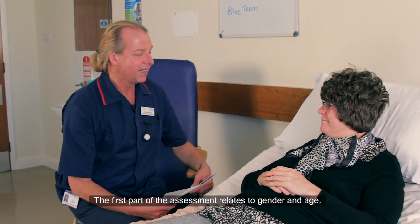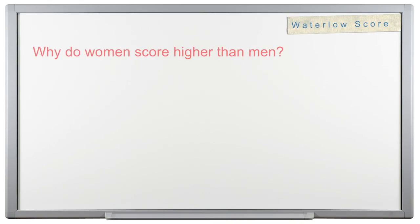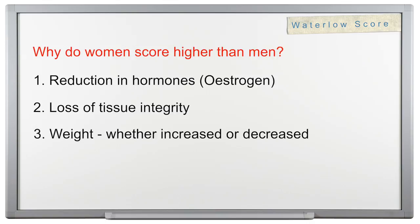As Mrs. Smith is female, she will score two. But why do women score higher than men? There are several reasons: one, reduction in hormones — estrogen; two, loss of tissue integrity; three, weight, whether increased or decreased; four, anatomical differences.